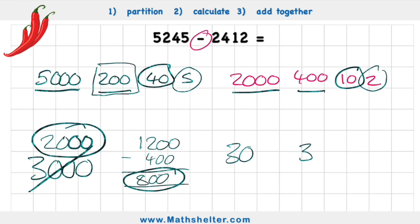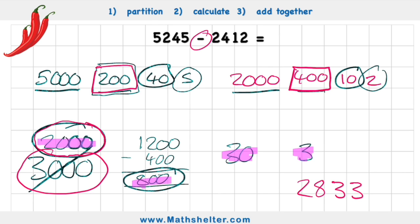So in this case, my final answer is 2,833. Let's write that in. 2,833. Now this method is only possible to do if you can think about this little borrowing part here where I didn't have enough in my 200 to subtract 400. So I needed to borrow from what I already had calculated, which was my 3,000 and put that down to a 2,000 to get a spare 1,000 to give to that 200.